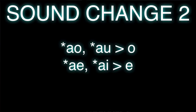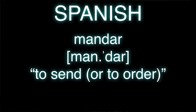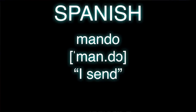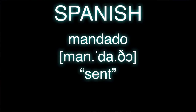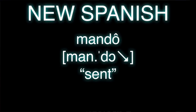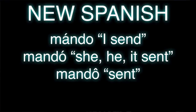For example, 'a' followed by 'o' just became 'o'. So let's take a verb like mandar, 'to send'. In the first person singular present, that's mando. In the third person singular preterite, that's mandó. And now, if you look at the past participle, what used to be mandado is now mando. So basically you have three words — mando, mando, mando — all of which are distinguished only by tone.